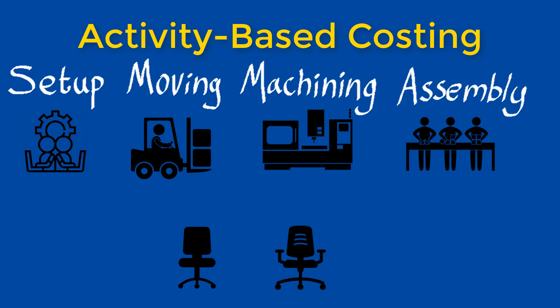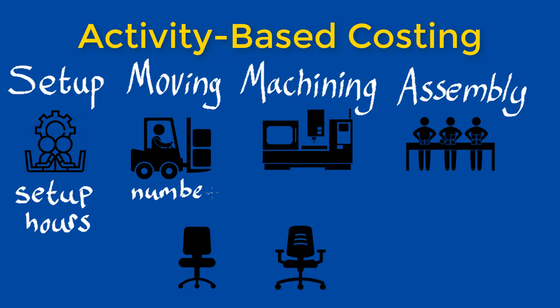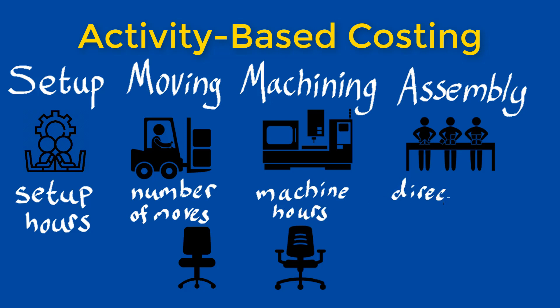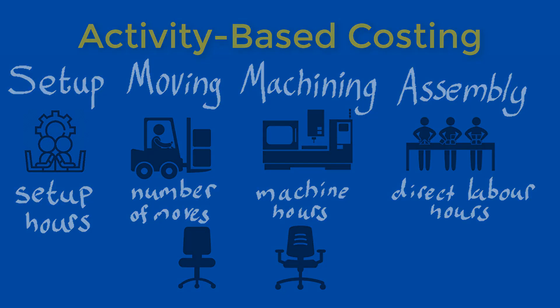The basis for determining how much each activity is applied to each product depends on different factors. For example, setup could be based on setup hours, moving could be based on the number of moves, machining could be based on the machine hours, and assembly could be based on the direct labor hours.